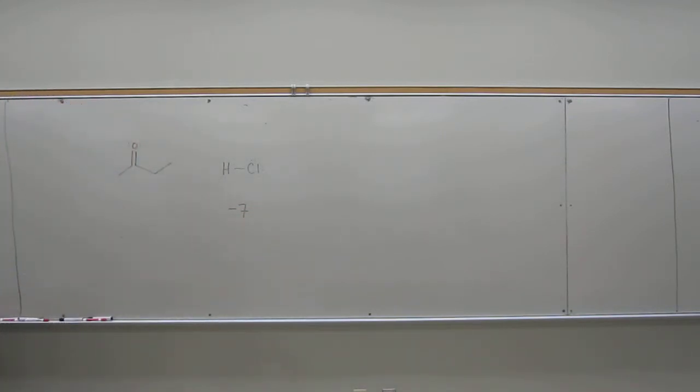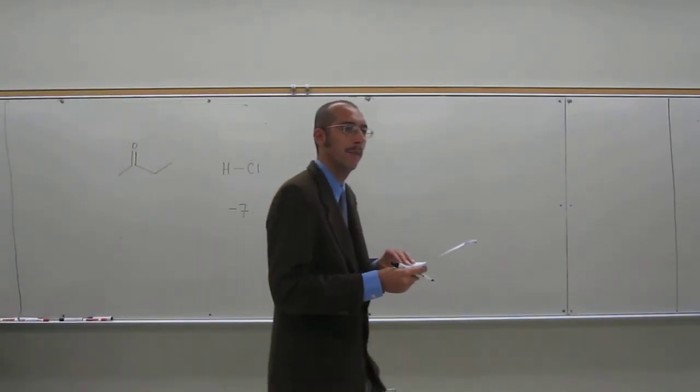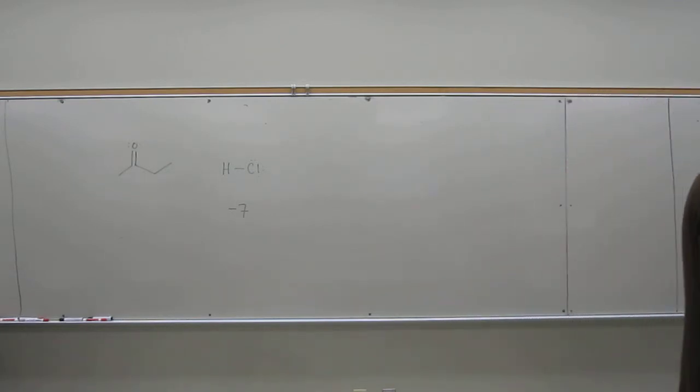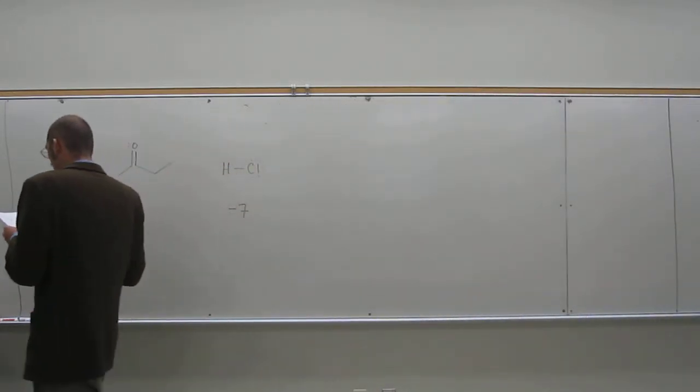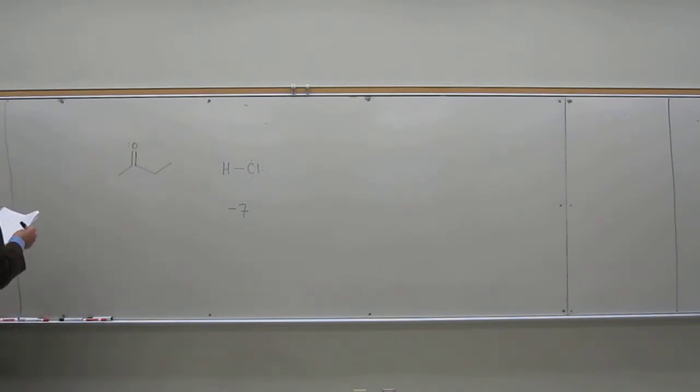So already we're thinking that's probably going to be the acid, but we should confirm that by looking at the pKa of a ketone. The alpha hydrogen of a ketone, because that's the most acidic hydrogen. And what did we find there? Positive 20.